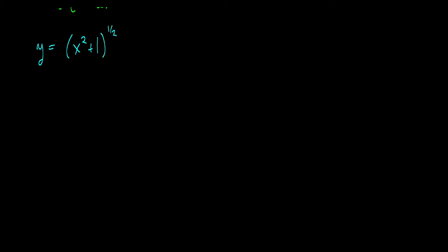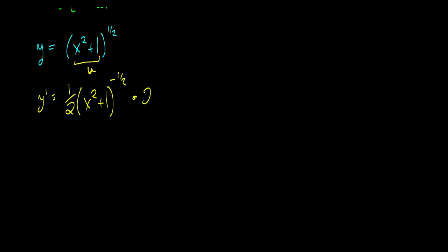This is the same thing as the square root of x squared plus 1. What we do is take the derivative of the outside function, treating the inside as if it were a single variable u. So y prime equals one half — we take the power down, keep the inside the same, subtract one from the power giving negative one half — and then multiply by the derivative of the inside, which is 2x. So we get x times x squared plus 1 to the negative one half.